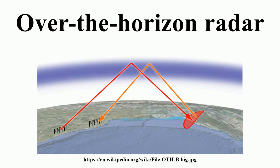Over-the-horizon radar, or OTH, is a type of radar system with the ability to detect targets at very long ranges, typically hundreds to thousands of kilometers beyond the radar horizon, which is the distance limit for ordinary radar. Several OTH radar systems were deployed starting in the 1950s and 1960s as part of early warning radar systems, but these have generally been replaced by airborne early warning systems instead.